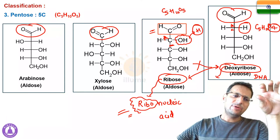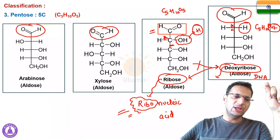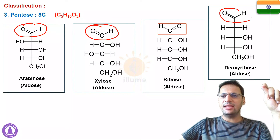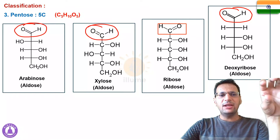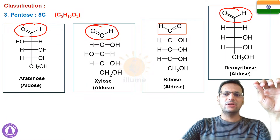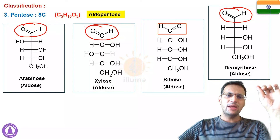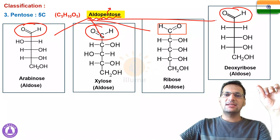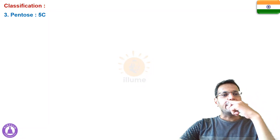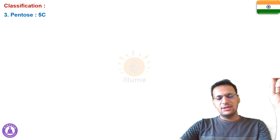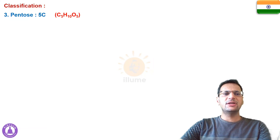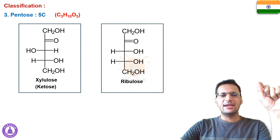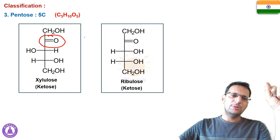All four pentoses — arabinose, xylose, ribose, and deoxyribose — have an aldehyde group, making them all aldose sugars. The combined term for a pentose with an aldehyde group is aldopentose. There are also ketopentoses — pentose sugars with a ketonic group — such as xylulose and ribulose, which clearly show the presence of a ketone group.